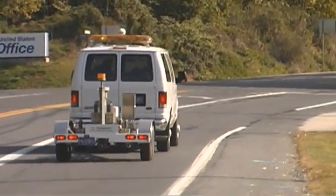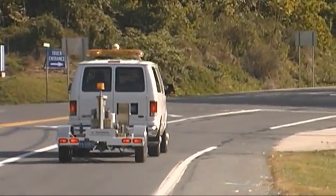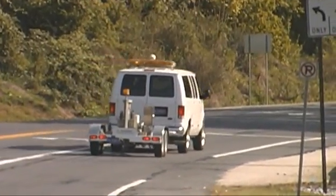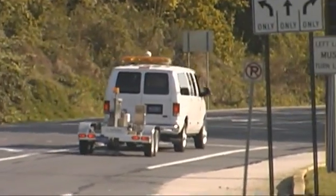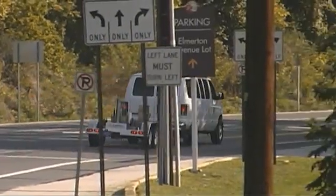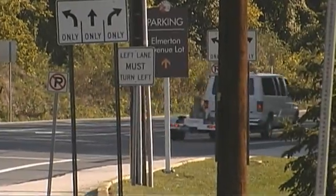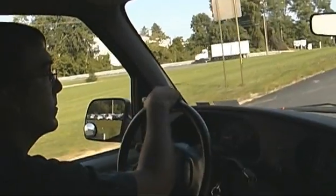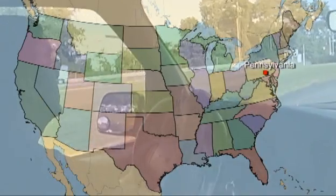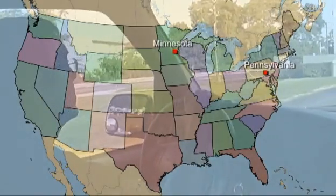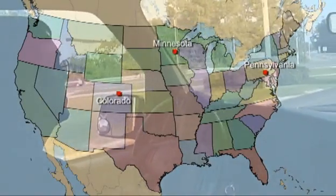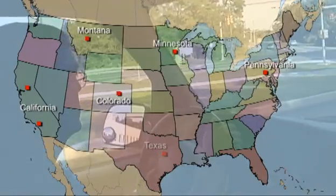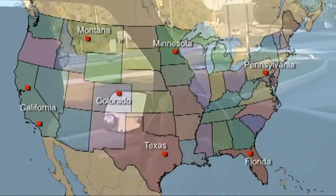With the current protocol, the FWD operator can drive to the calibration center, stay over just one night, calibrate the machine in the morning, and return home by that evening. Falling-weight deflectometer calibration centers are located in Pennsylvania, Minnesota, Colorado, Montana, California, Texas, and Florida.